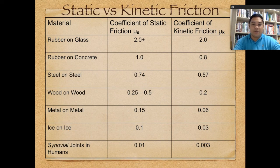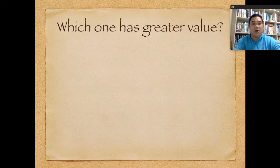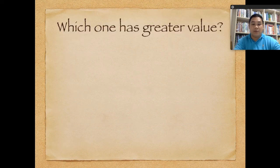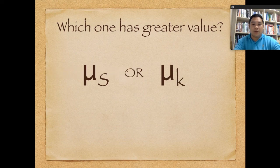Here are values for static versus kinetic friction for different materials: rubber on glass, rubber on concrete, steel on steel, wood on wood, and metal on metal. Observing the table, one pattern is clear — the coefficient of static friction is always greater than the coefficient of kinetic friction. If you answered static friction, you are correct.